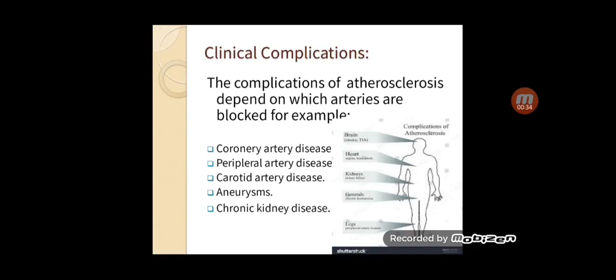Carotid artery disease results from narrowing of the arteries close to the brain. For a person with carotid artery disease, it can cause transient ischemic attack or stroke. Peripheral artery disease results from narrowing of the arteries in the arms and legs, causing circulation problems. The affected person is less sensitive to heat and cold, increasing risk of burns and frostbite. In severe cases, it can cause poor circulation leading to tissue death or gangrene.